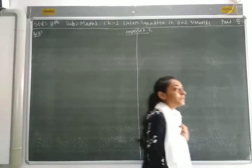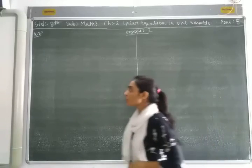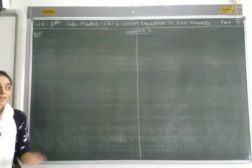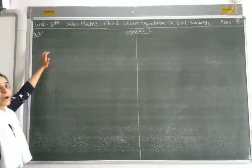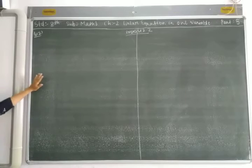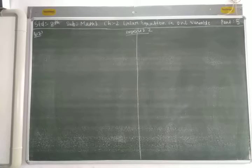In the previous video we were solving Exercise 2.2 questions. So we will continue with question number 12. Question number 12 says: 15 years from now, Ravi's age will be 4 times his present age. What is Ravi's present age?